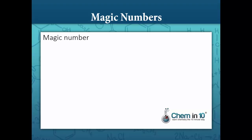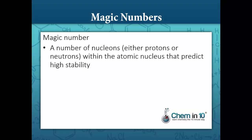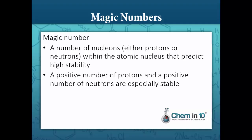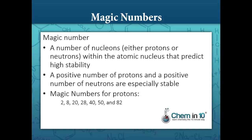There is also something called magic numbers. Experimental evidence has shown that the number of nucleons — a nucleon can either be a proton or a neutron — helps to determine whether a nucleus will be stable. When considering magic numbers, the greatest influence on stability is having an even number of both protons and neutrons. In fact, most nuclei containing both an even number of protons and an even number of neutrons are stable.